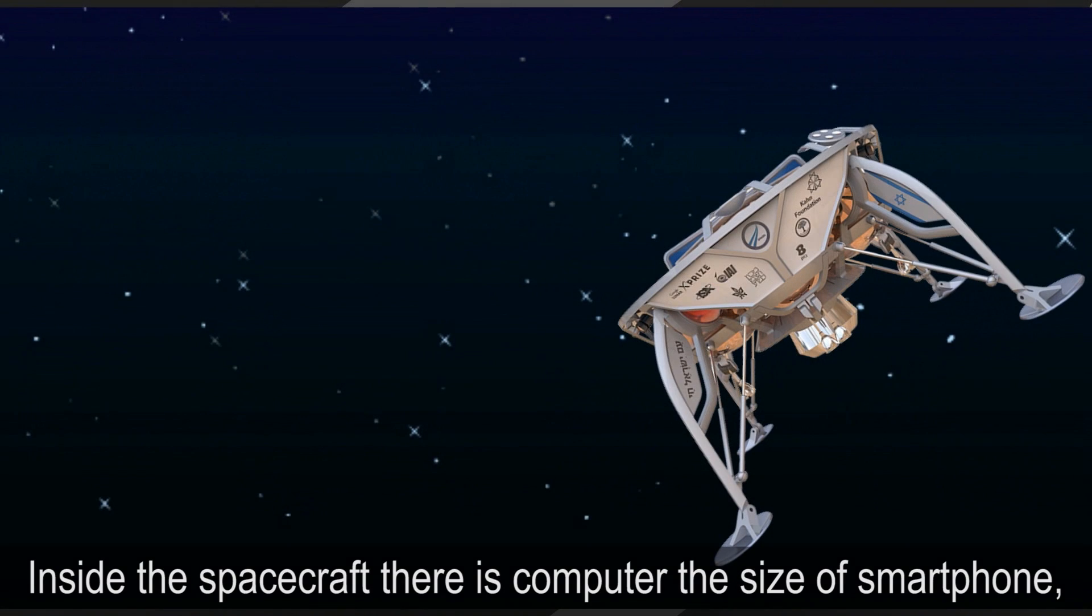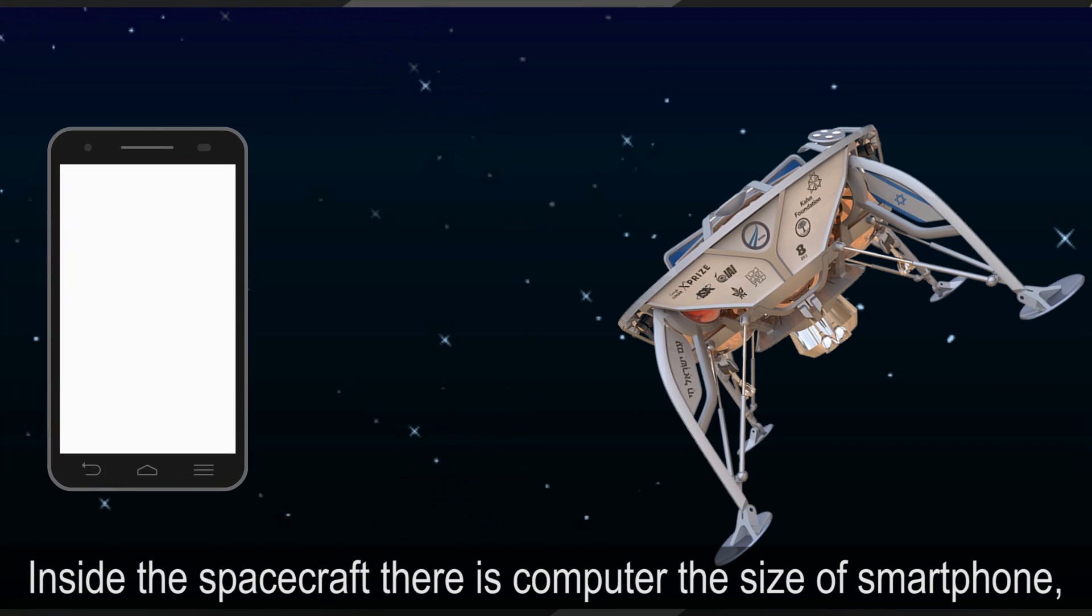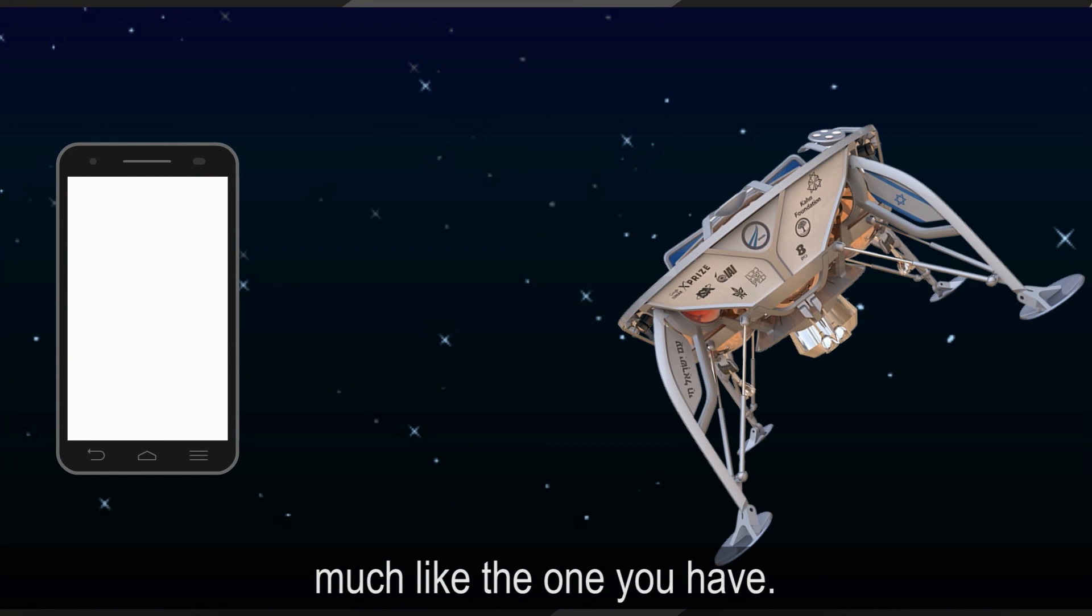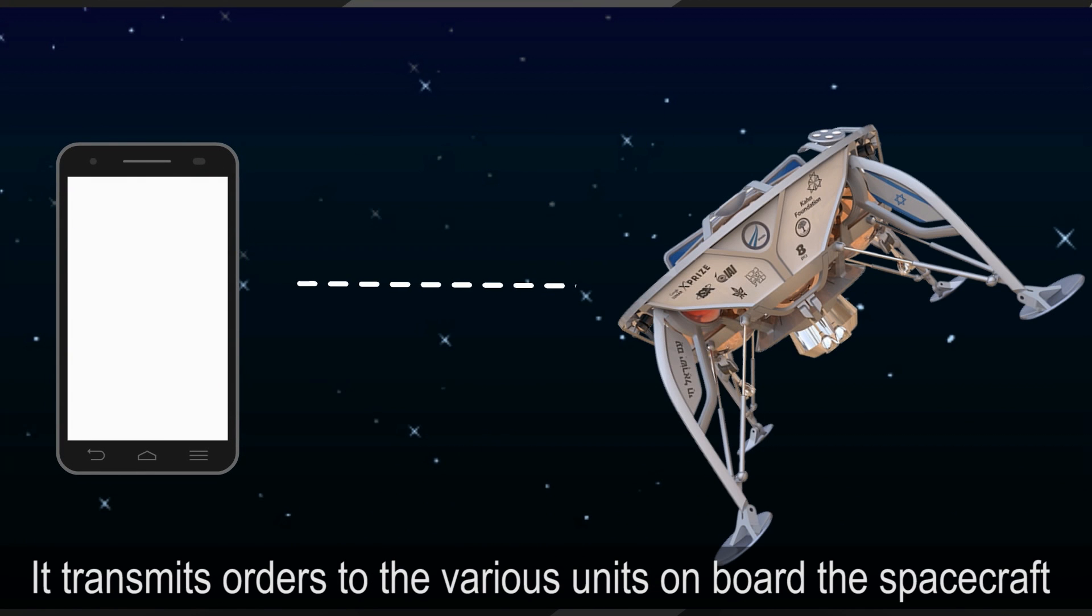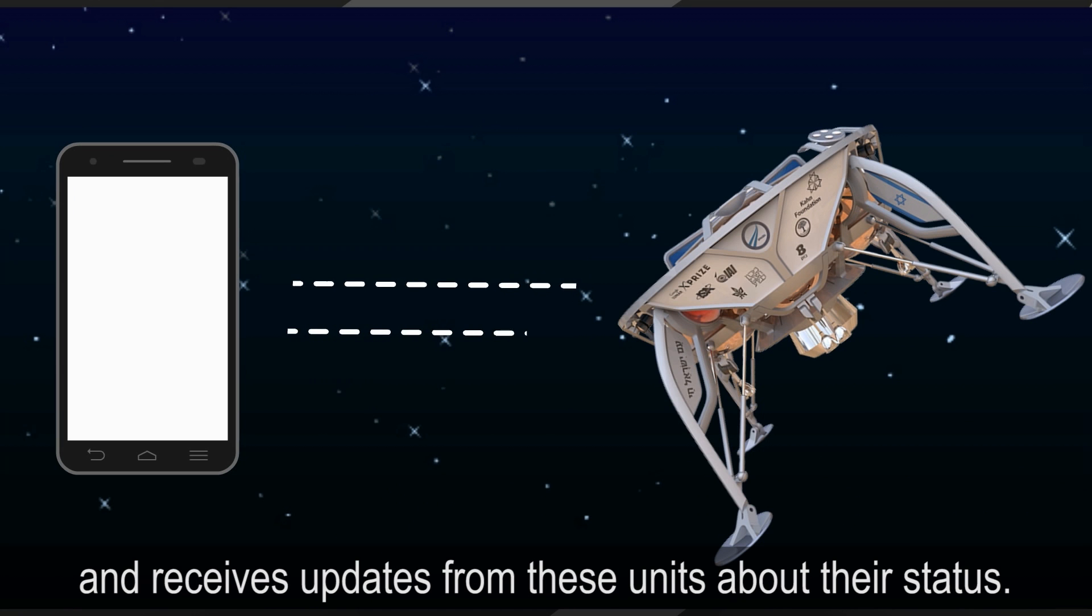Inside the spacecraft, there's a computer the size of a smartphone, much like the one you have. It transmits orders to various units on board the spacecraft and receives updates from these units about their status.